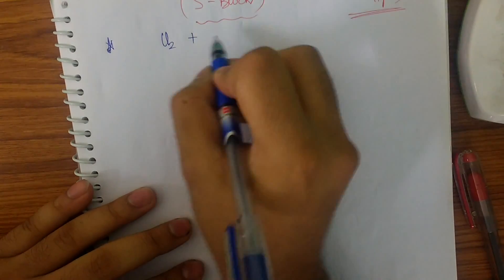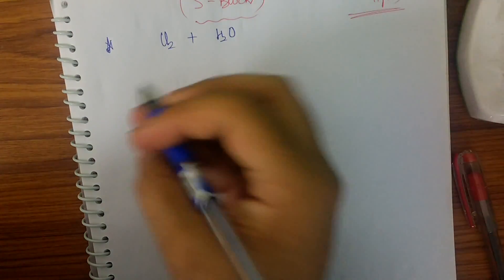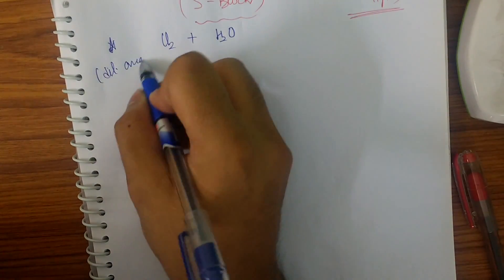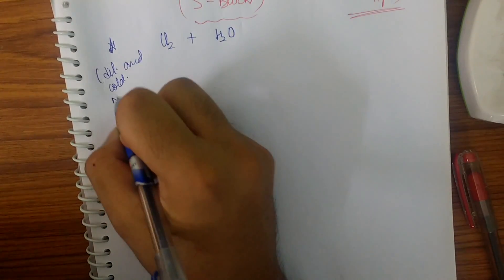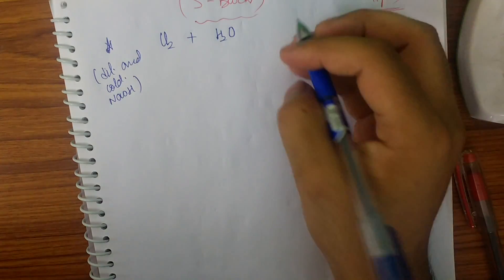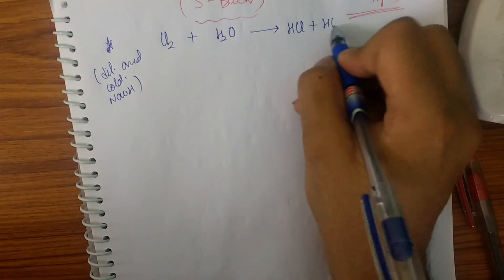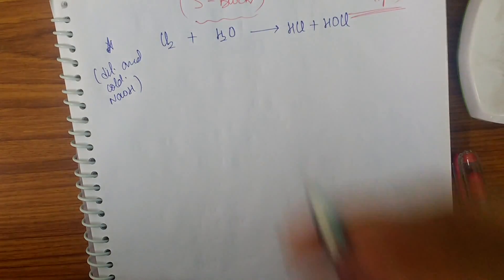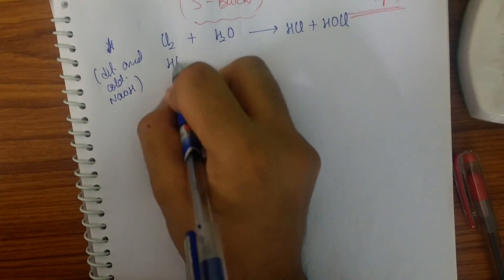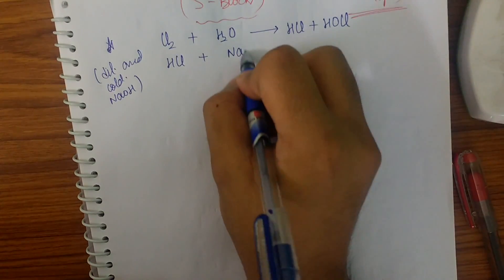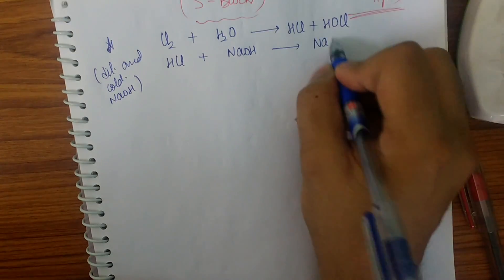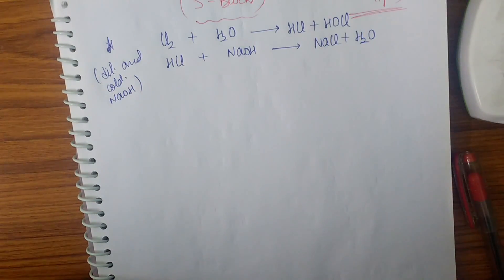If I take chlorine and H2O we shall be deriving all the reactions. First of all I am taking dilute and cold NaOH. Whenever we take NaOH, H2O is always present because we always take aqueous NaOH. So first we react Cl2 with H2O to get HCl and HOCl. Now the reaction is asked with NaOH.